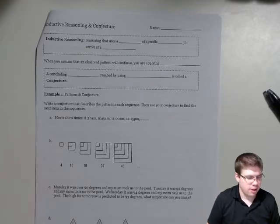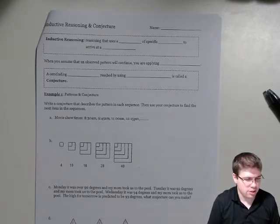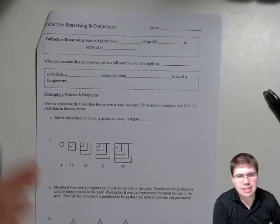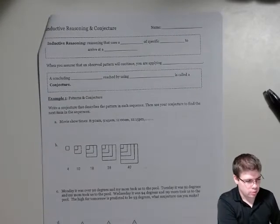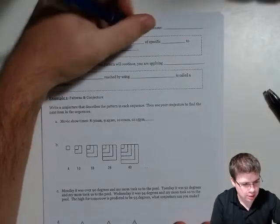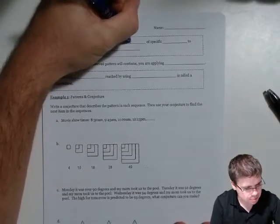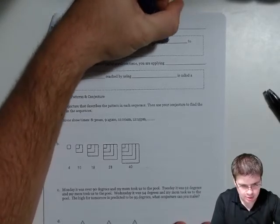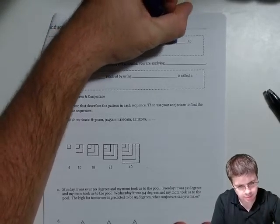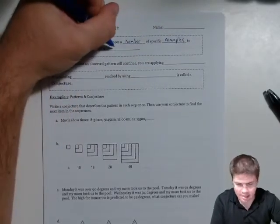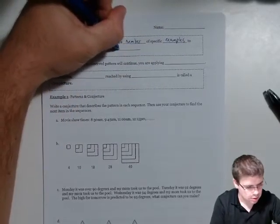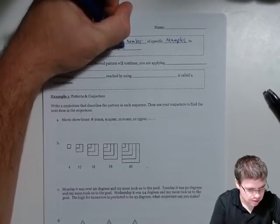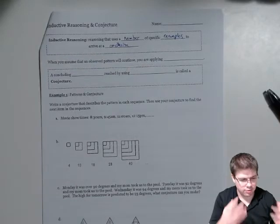Hey geometry, so today we're gonna continue our section, our unit on logic and proof, looking at inductive reasoning and conjecture and deductive reasoning as well. Inductive reasoning is reasoning that uses a number of specific examples to arrive at a conclusion, so just making a number of examples of different observations kind of come into a conclusion based on an observed pattern.